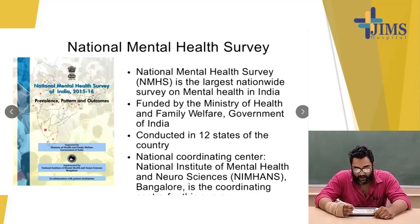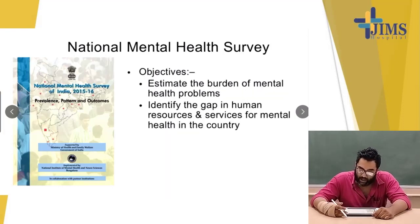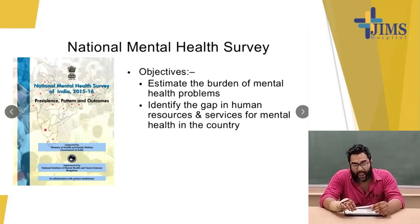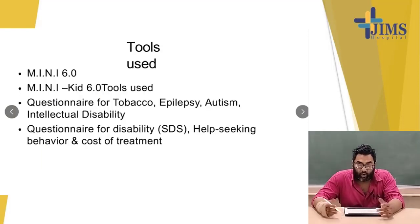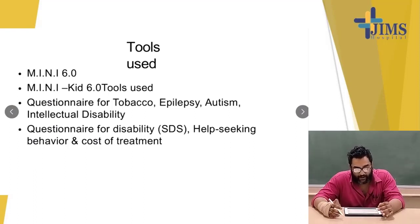The National Mental Health Survey (NMHS) is the largest nationwide survey on mental health in India, funded by the Ministry of Health and Family Welfare, Government of India, conducted across 12 states. The national coordinating center was NIMHANS in Bangalore. The objectives were to estimate the burden of mental health problems and identify the gap in human resources and services for mental health. Tools used were MINI 6.0 and a questionnaire for tobacco, epilepsy, autism, and intellectual disability.